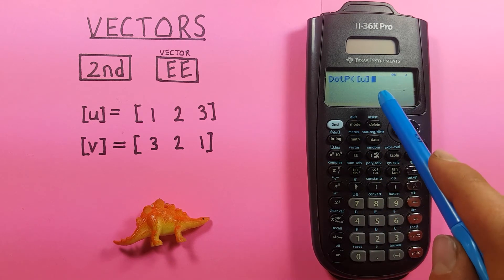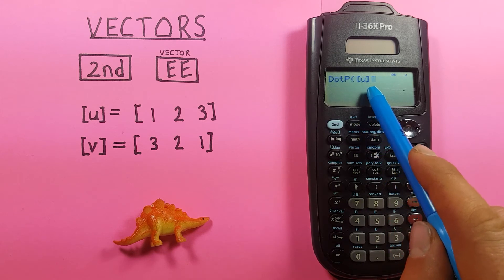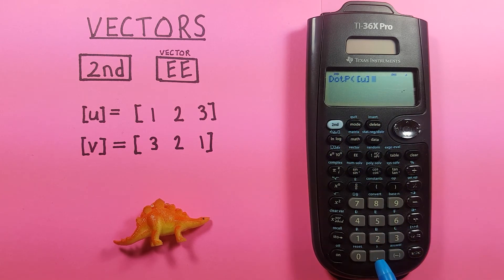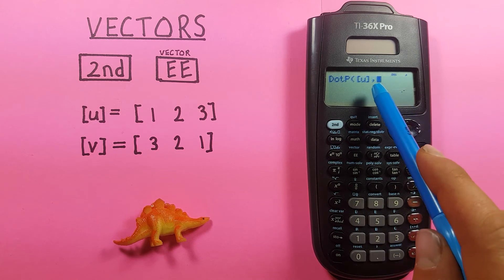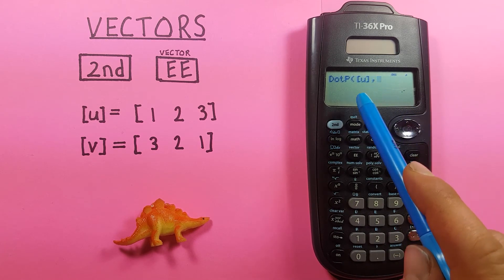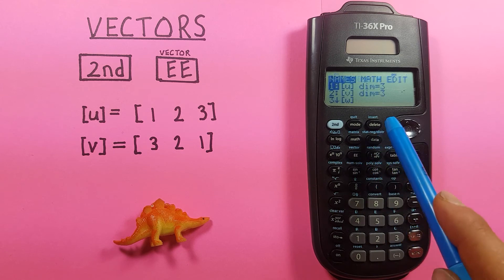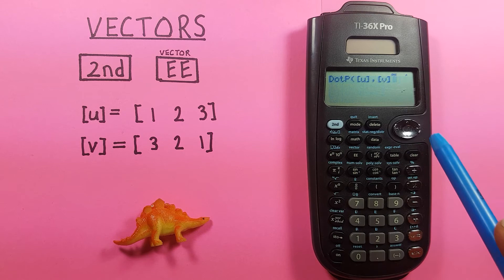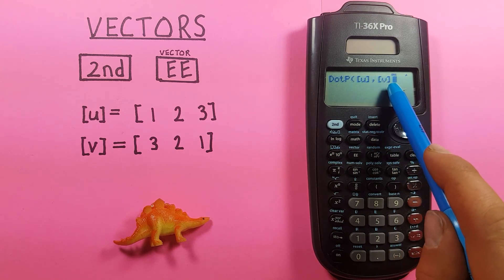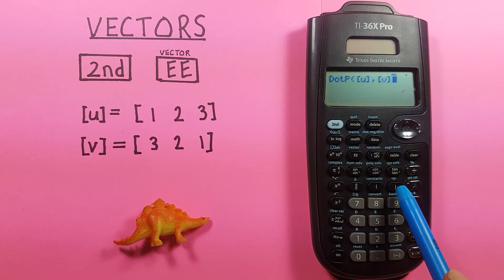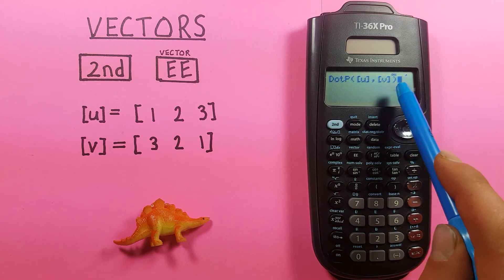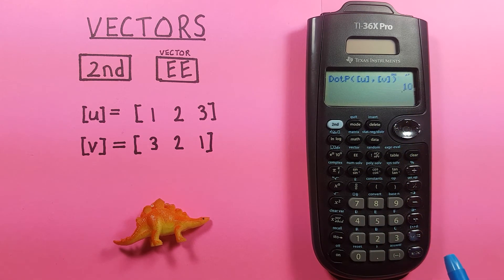So we have dot p bracket U. Now we want to put a comma there using second decimal. You can see we have a comma there now. And if we go second function EE and highlight our V vector this time, pressing enter, you can see it's now on the other side of the comma. And if we close our bracket, we have the dot product of U comma V. So we press enter and we get 10, which is the result.